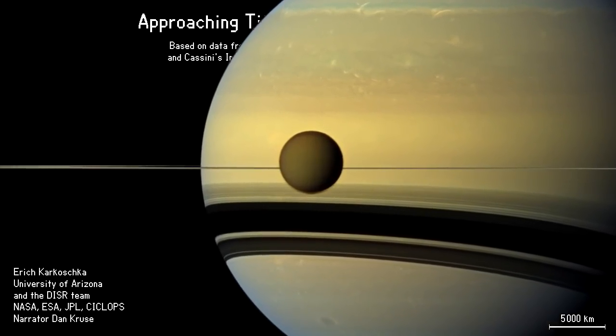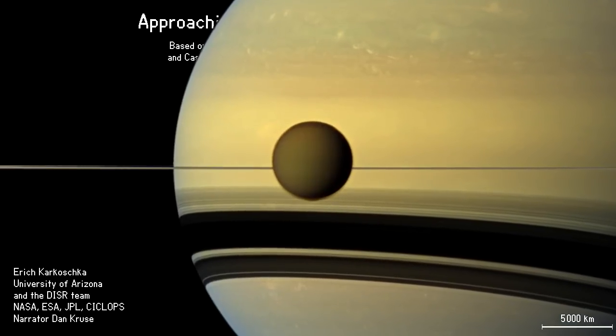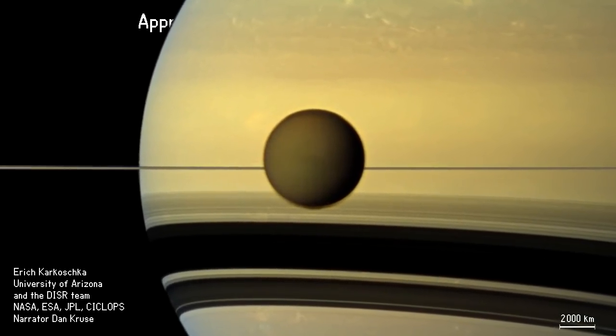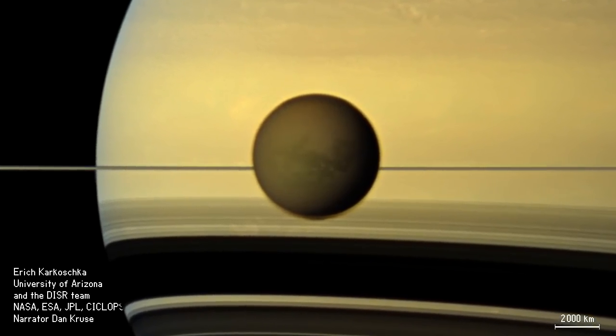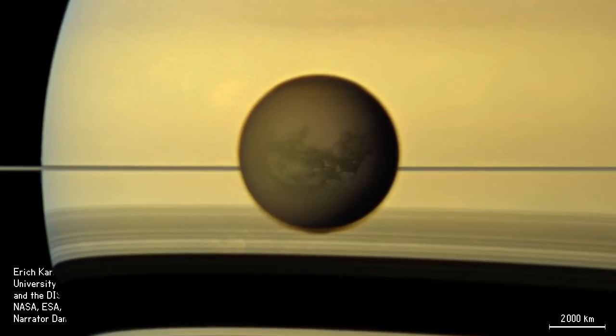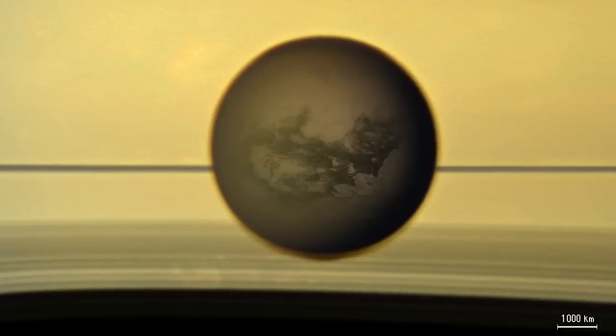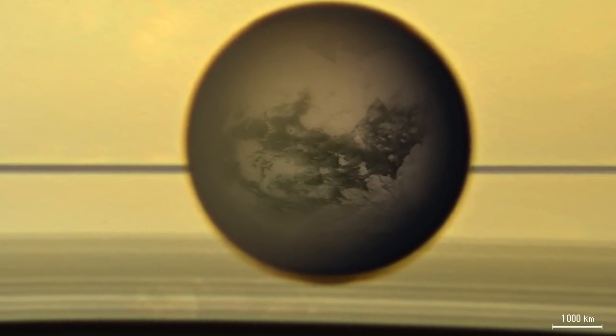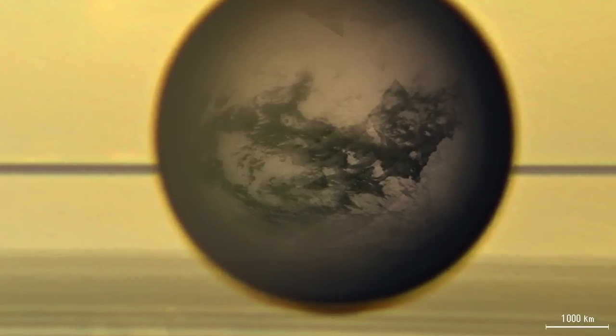Saturn's atmosphere shows a banded structure and a number of storms. We view the edge of Saturn's gigantic ring system. The rings cast major shadows onto Saturn's southern hemisphere. Titan is surrounded by a partially transparent brown haze.